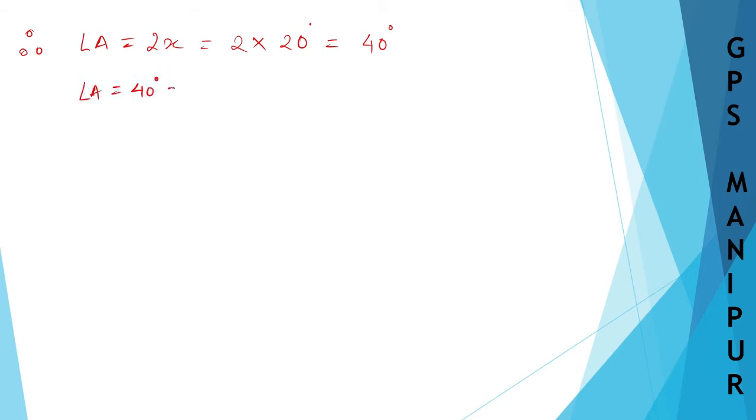So angle A is 40 degrees, which equals 40 times π by 180 using the formula for converting to radians. This simplifies to 2π by 9 radians.